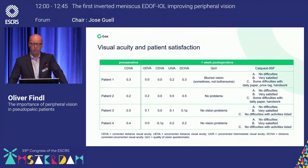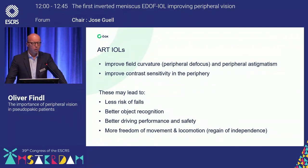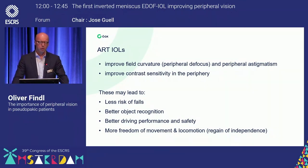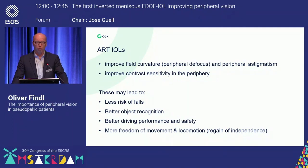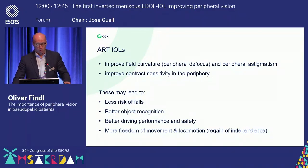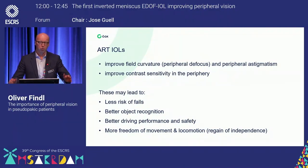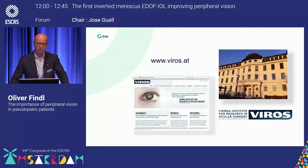To summarize: this is a lens which improves peripheral defocus and peripheral astigmatism, and therefore also improves contrast sensitivity. This may lead to less risk of falls, better object recognition, and better driving performance — which still needs to be further demonstrated. In general, for patients, this hopefully means more freedom of movement and locomotion, meaning regaining of independence, which is very important especially in the elderly cataract surgery population. Thank you very much.